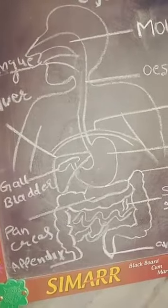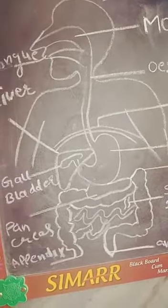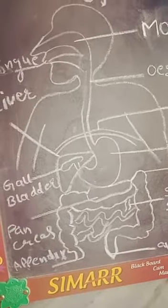Mucus protects our stomach from hydrochloric acid, preventing the acid from eating the stomach lining from the inside. After that, the food enters the small intestine.